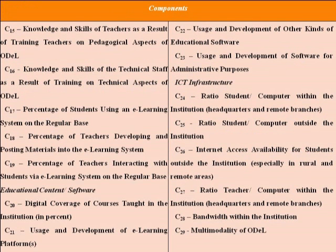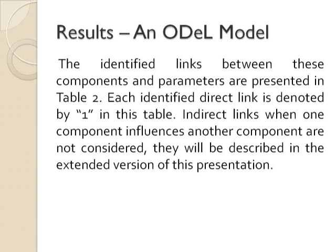The rest of Table 1 presents only the components. The identified links between these components and parameters are presented in Table 2. Each identified direct link is denoted by a one in this table.